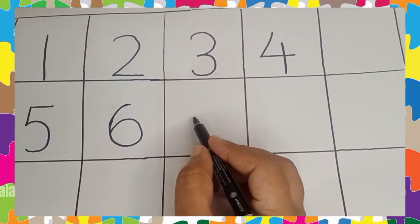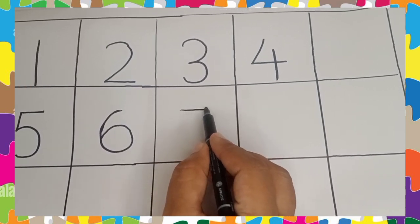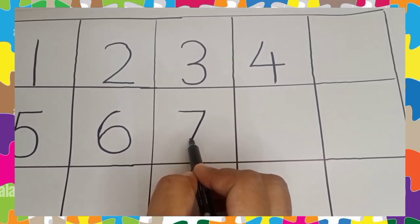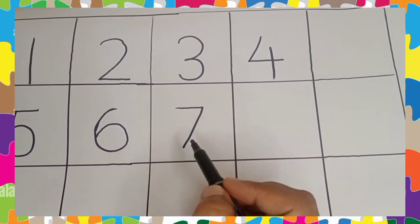Go right and slant down to write the number 7.